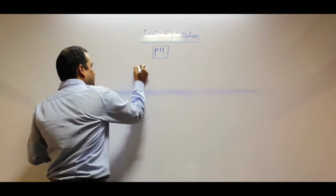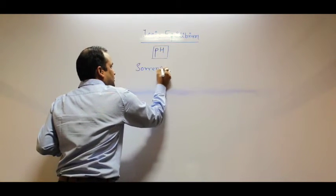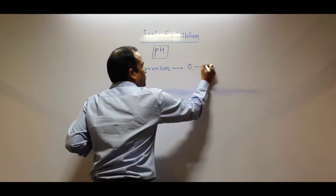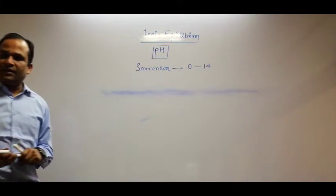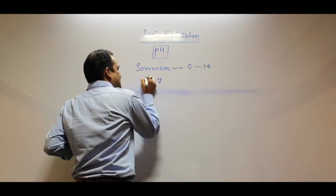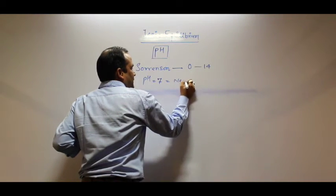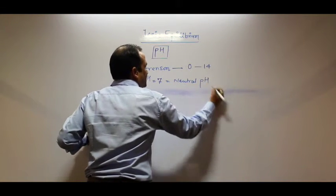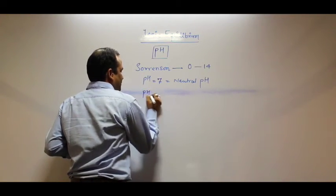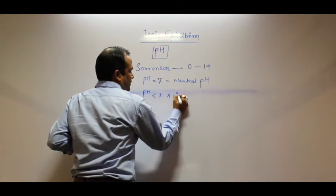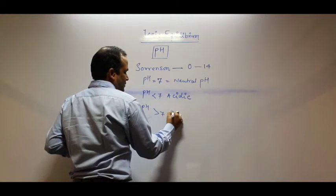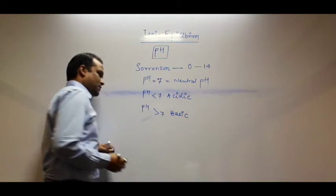If you have studied in 10th class, there is a scale which is known as the Sorensen scale, where pH values generally vary from 0 to 14. And in this Sorensen scale, if the value of pH is equal to 7, we consider it as a neutral pH. If the value of pH is below 7, that is acidic. And if the value of pH is greater than 7, that is basic.